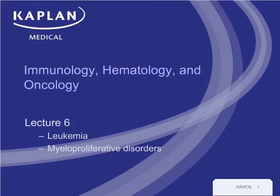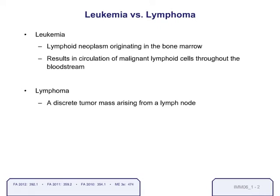In this next lecture, we're going to talk about the different types of leukemia that might be tested on Step 1, as well as the various types of myeloproliferative disorders. To begin, the definition of leukemia is a lymphoid neoplasm originating in the bone marrow that results in circulation of malignant lymphoid cells throughout the bloodstream. That's different than lymphoma, which usually happens as a discrete tumor mass arising from a lymph node.